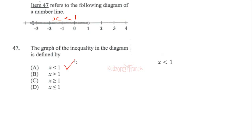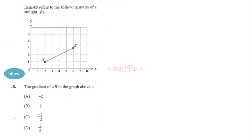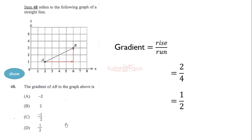Item 48 refers to a graph of a straight line. The gradient of AB is given by rise over run. We have a rise of two and a run of four, giving two over four, which simplifies to one over two. The correct choice is one over two, which is option D.